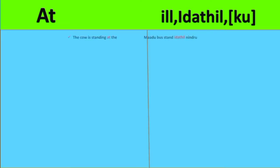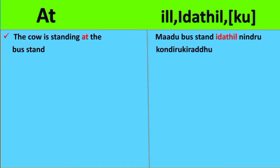The first example is: 'The cow was standing at the bus stand.' Here, 'at' is used when we are pointing out a specific place — the bus stand. So in that case, we will use 'idathil' in Tamil. Madu bus stand idathil nindru kondi irikkiyirudu. Madu means the cow, bus stand means bus stand, idathil means 'at', and nindru kondi irikkiyirudu means 'is standing'.